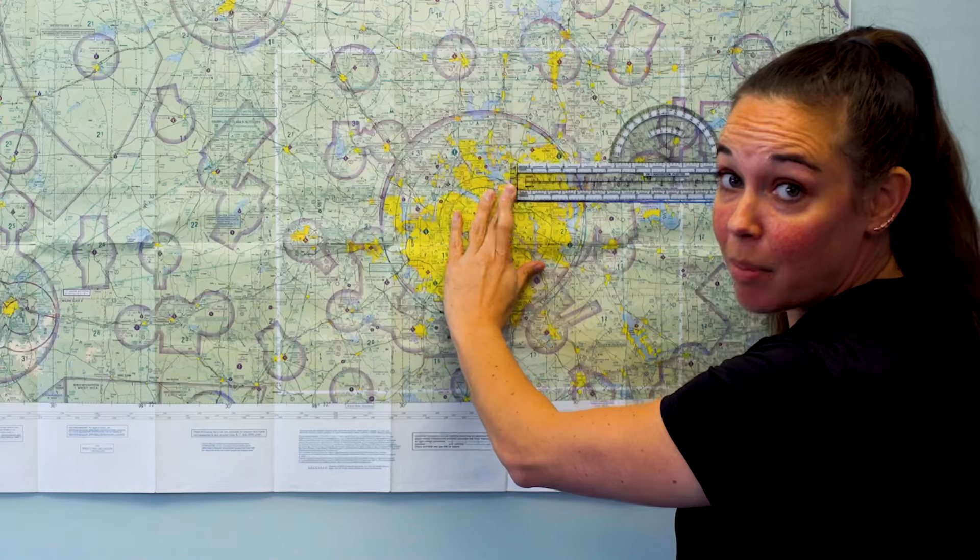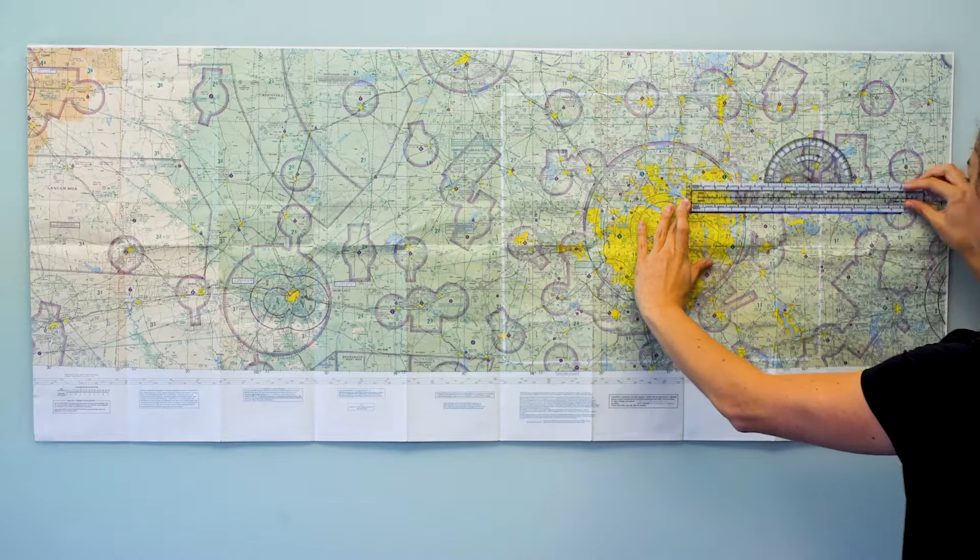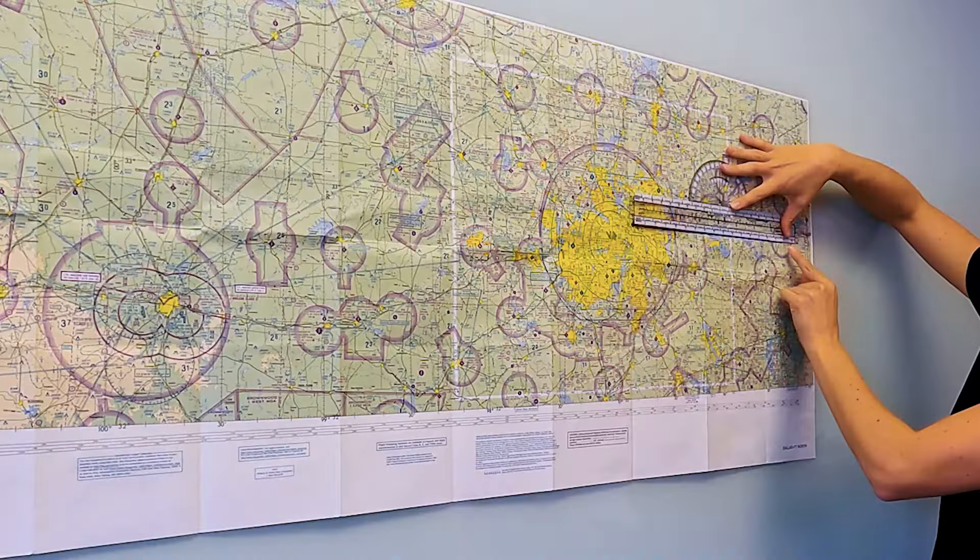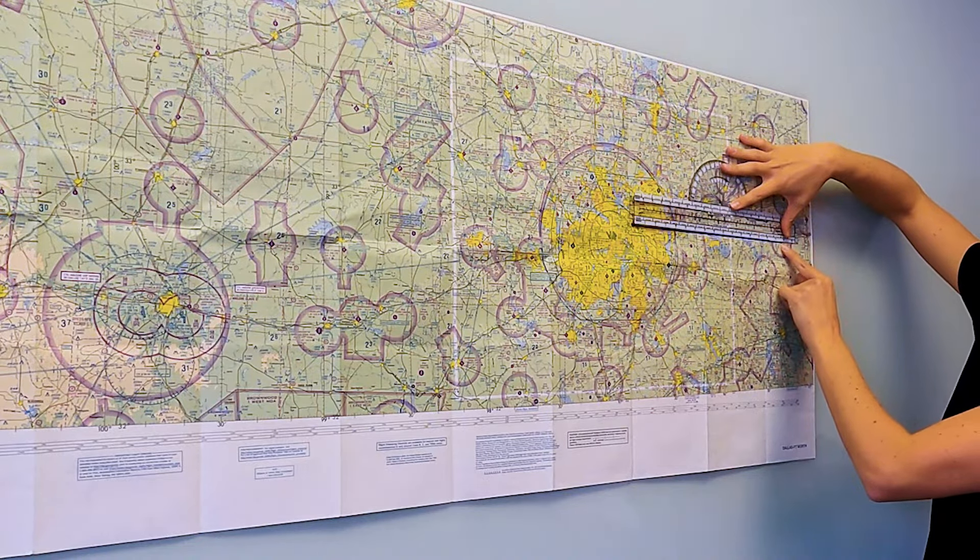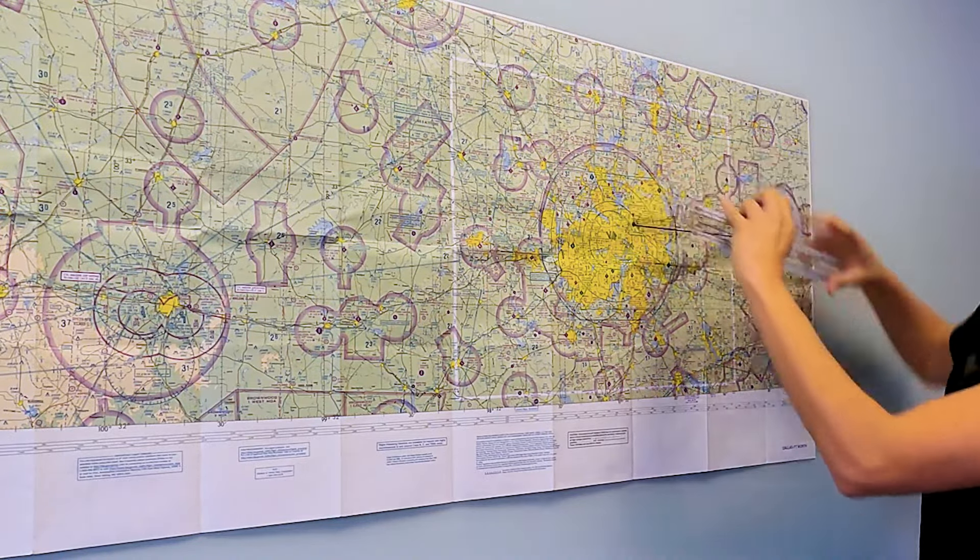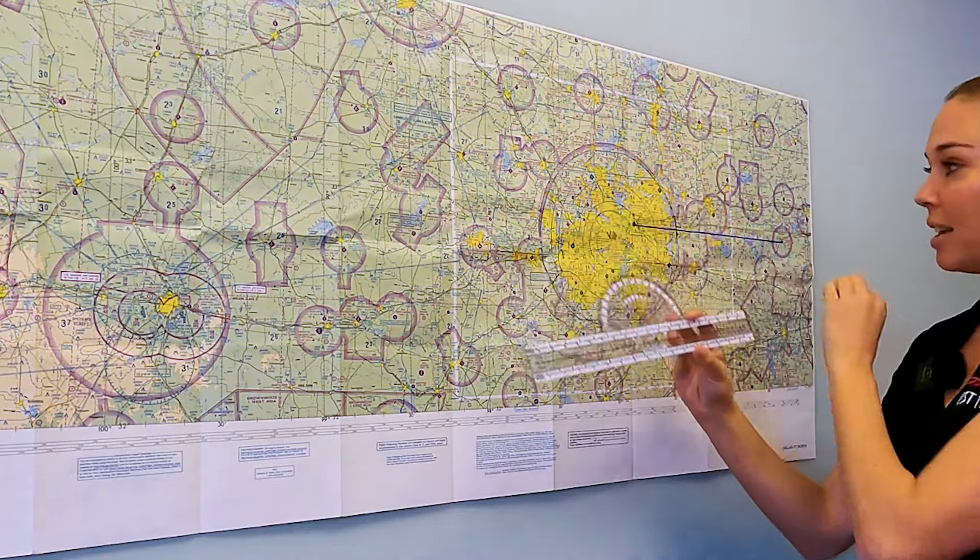I'm going to put zero miles on my airport. And I can see here at the end, it looks like Winsboro is 79 miles. So my total flight path would be 79 miles from Addison to Winsboro.